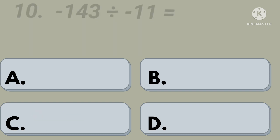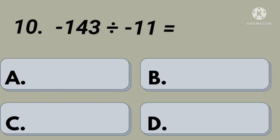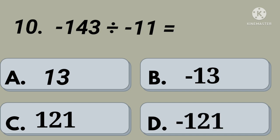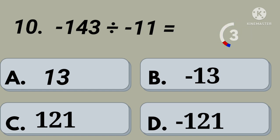Tenth question: minus 143 divided by minus 11 equals. Option A: 13, option B: minus 13, option C: 121, option D: minus 121. Your time starts now. Right, option A: 13.